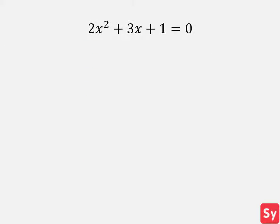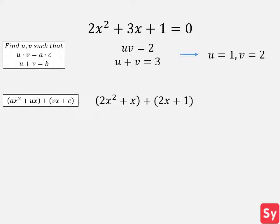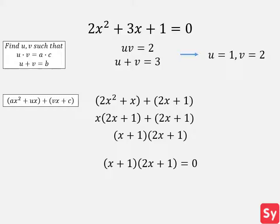Last example, we have 2x squared plus 3x plus 1 equals zero. We want to find u and v such that uv equals 2 and u plus v equals 3. We find that u equals 1 and v equals 2. Now we rewrite 2x squared plus 3x plus 1 by plugging in these new values. We factor out an x from 2x squared plus x and a 1 from 2x plus 1. We can then pull out a 2x plus 1 from the sum, giving us x plus 1 times 2x plus 1. Setting each factor equal to zero, we solve for x and get x equals negative 1 and x equals negative one half as our answer.